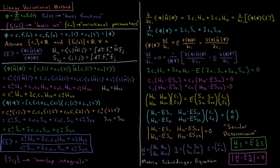To solve for the energies, we need the determinant of the matrix (H minus ES) to equal zero — this is because the equation has non-trivial solutions only when this matrix has no inverse. This equation is called the secular determinant. By computing the H integrals and S integrals from our basis functions, we can solve this determinant to obtain the energies.